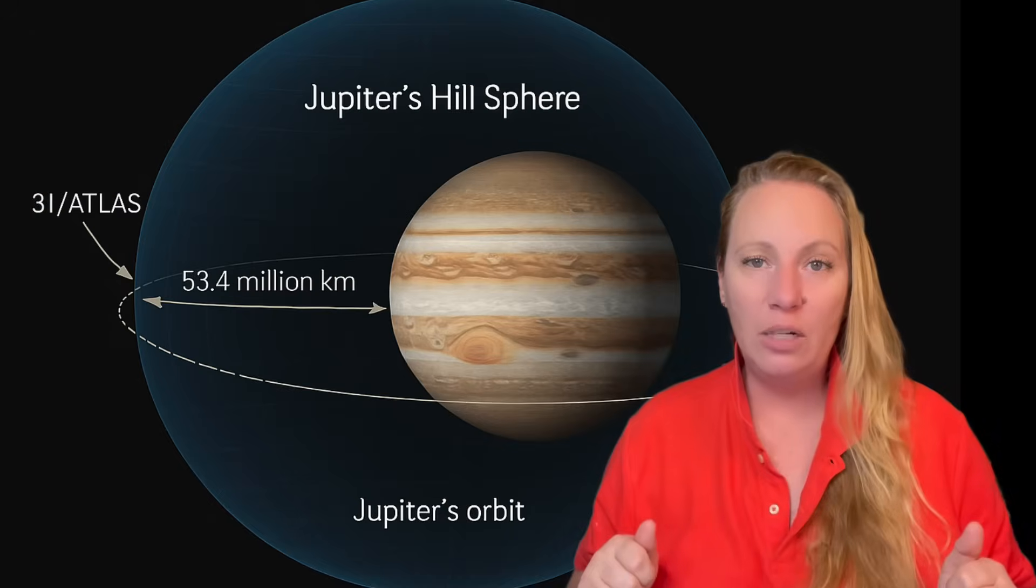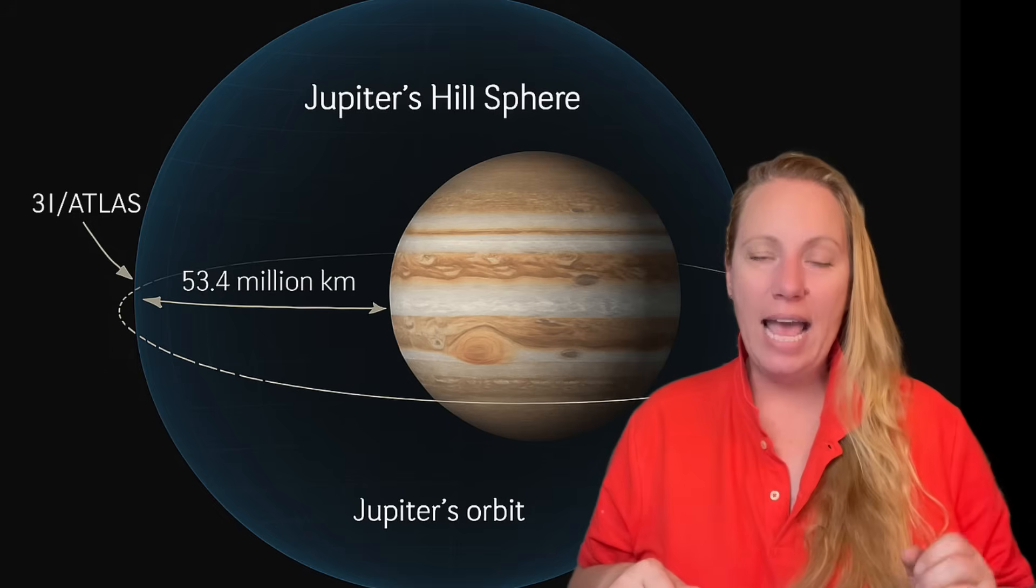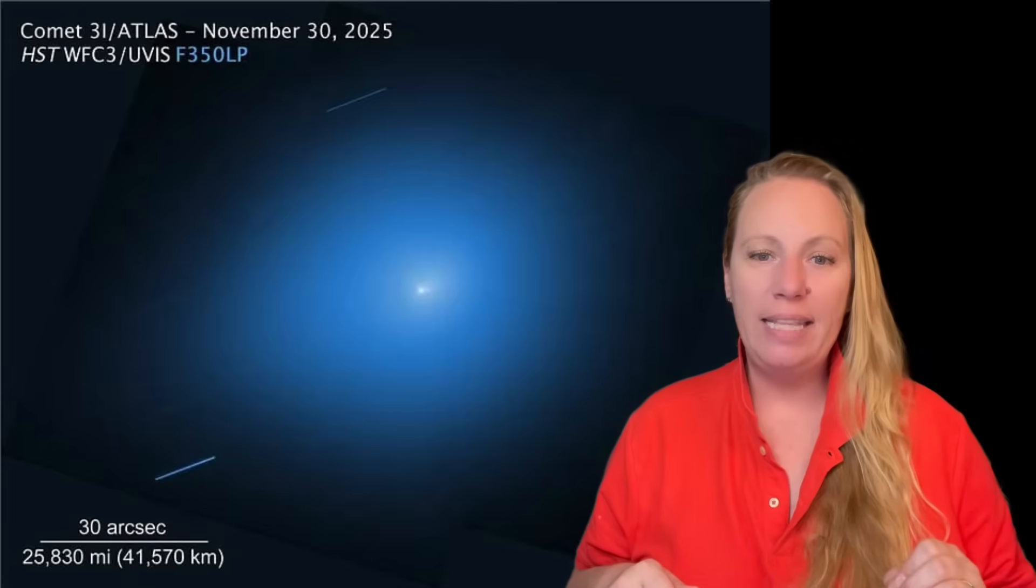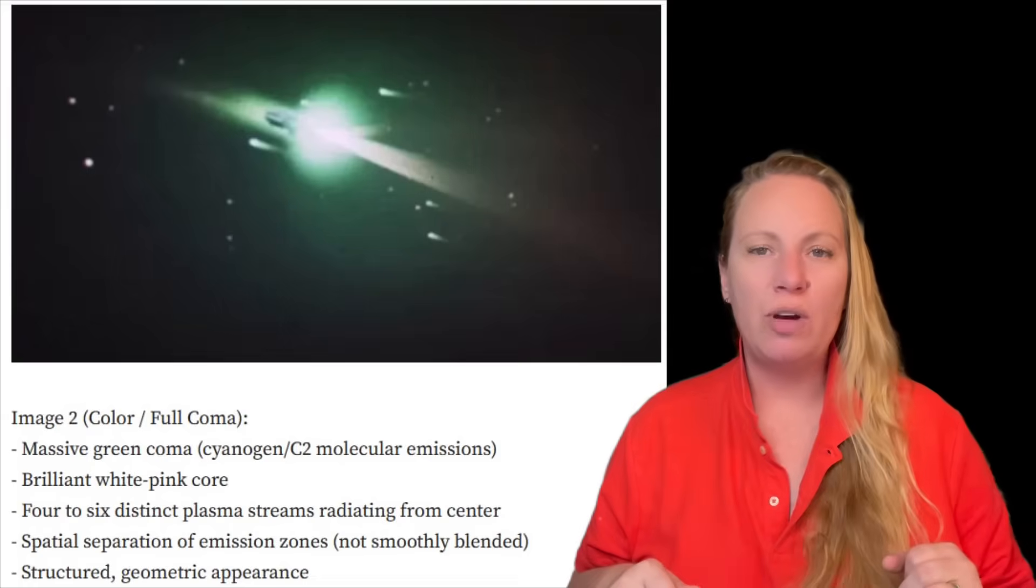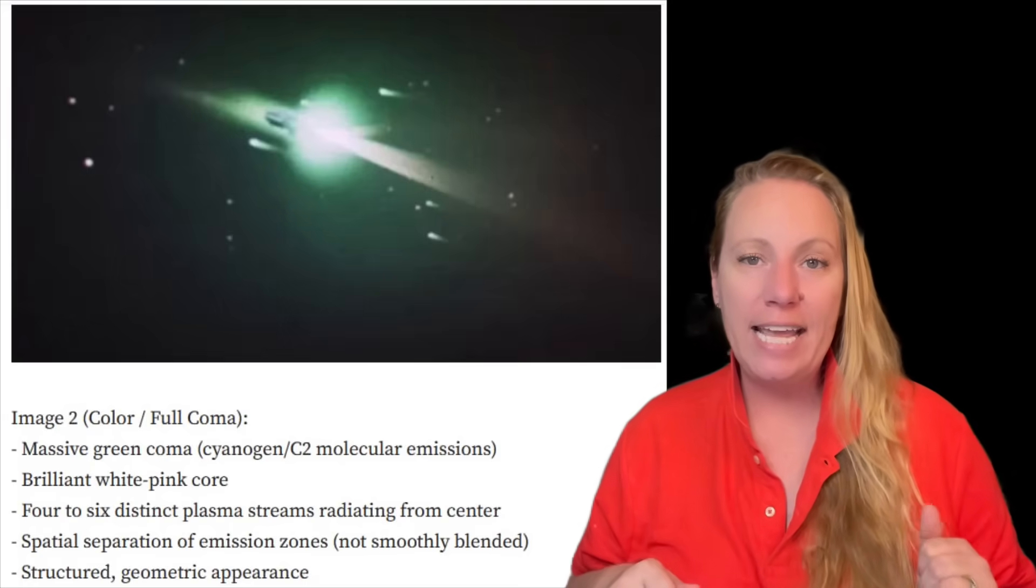Analysts suggest that Argus VIS could have observed 3i Atlas in high resolution during perihelion, where we couldn't see it from Earth and where it actually changed its course towards the Jupiter-Hill radius. This is the craziest anomaly for me. And what would explain that they have done that? This would explain the unusually precise documentation of its trajectory and geometric plasma emissions. Where did they come from?